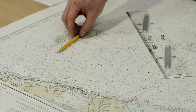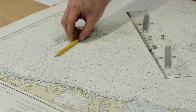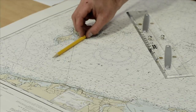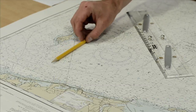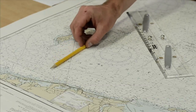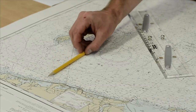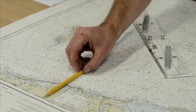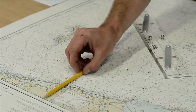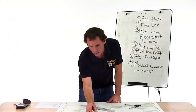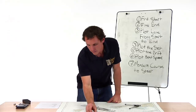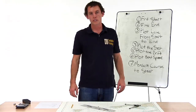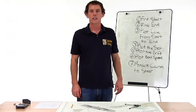We'll end up crabbing down that line sideways, accounting for the current on our way. So we go from point A straight to point B and arrive. That's the course to steer.